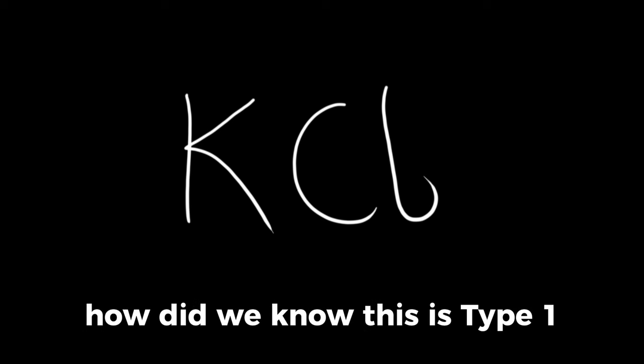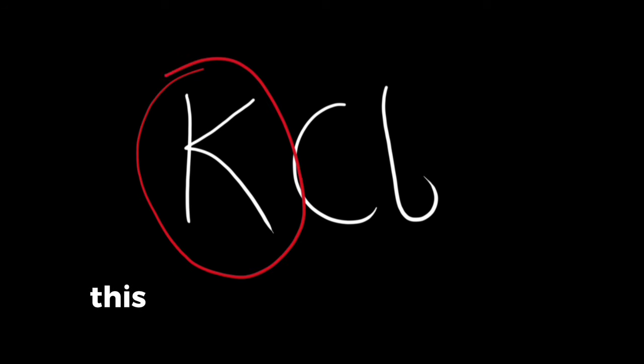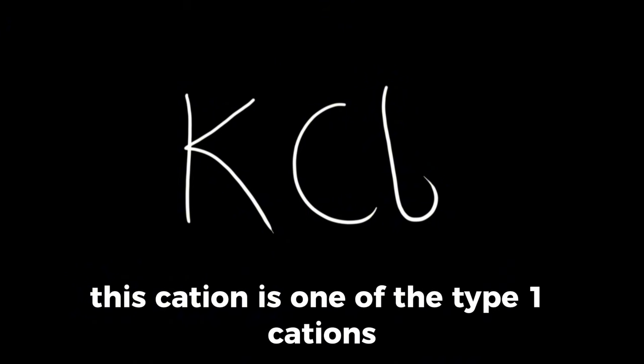Now let's take, for example, the compound KCl. This compound is type 1. How did you know this is type 1? We checked the cation. This cation is one of the type 1 cations.